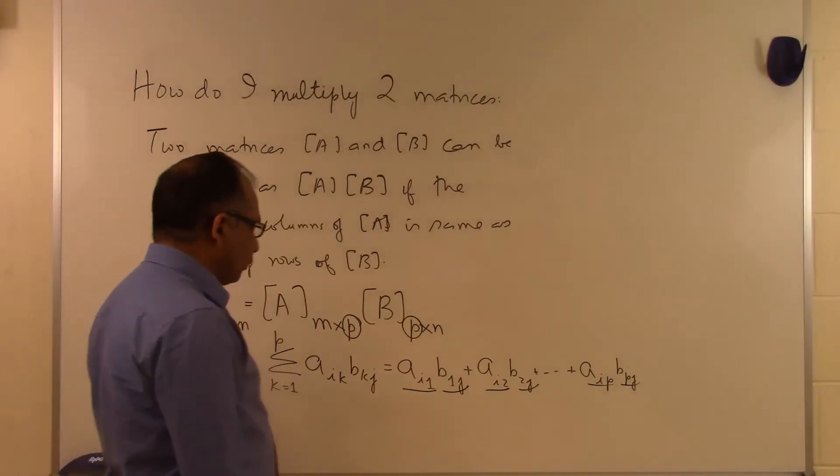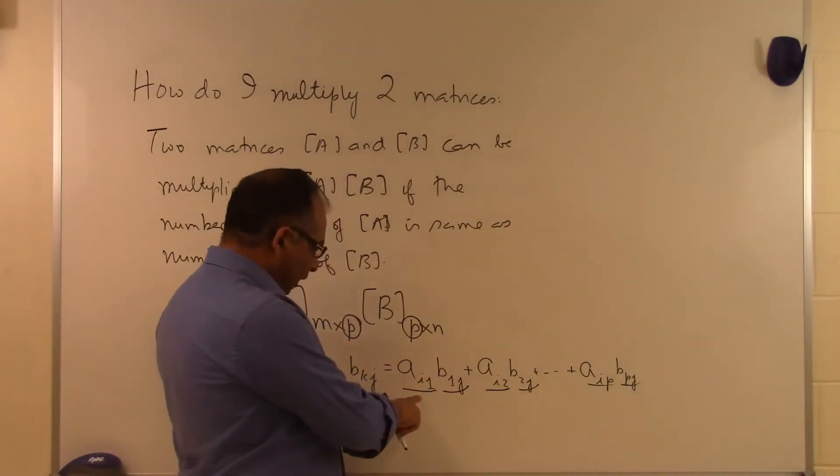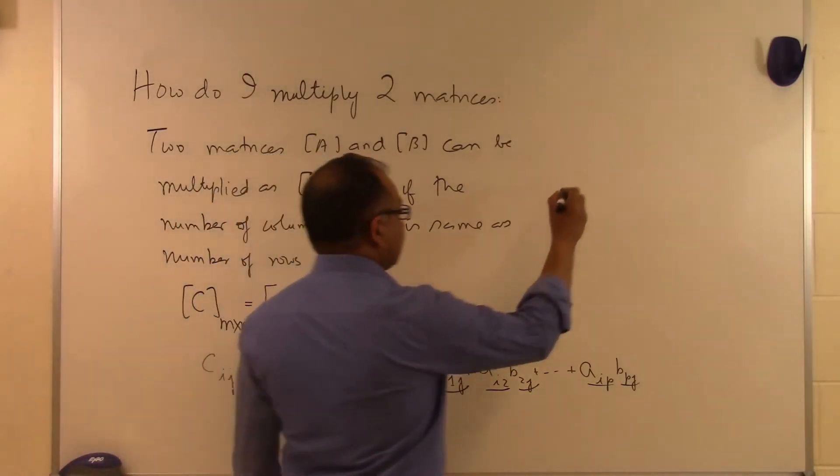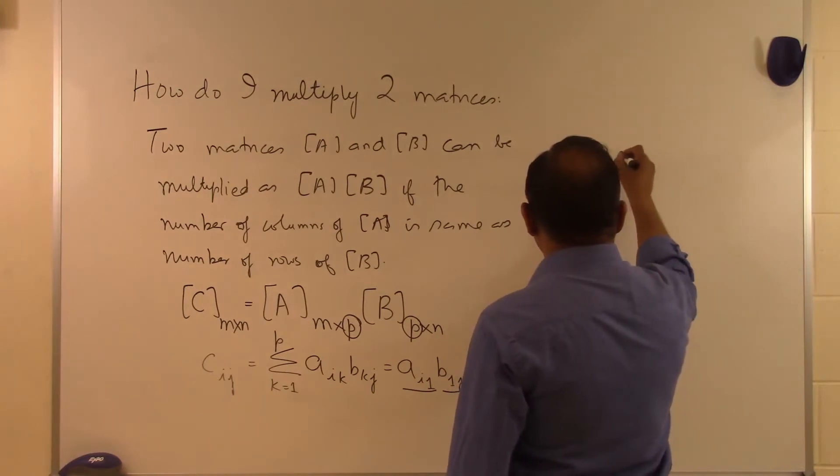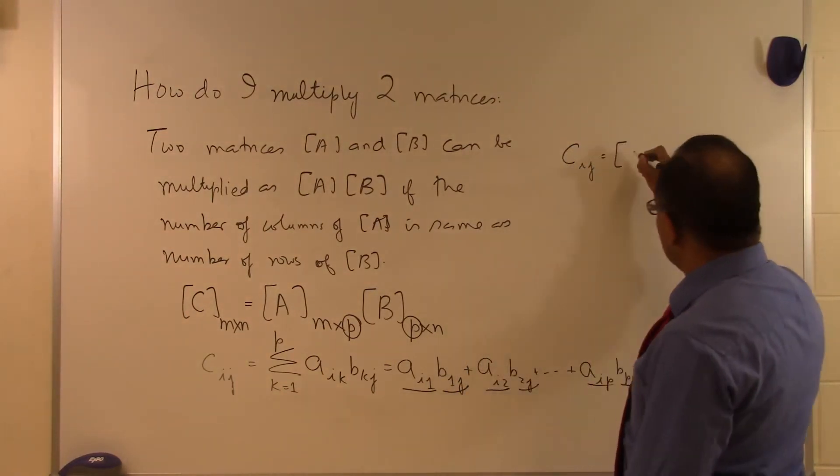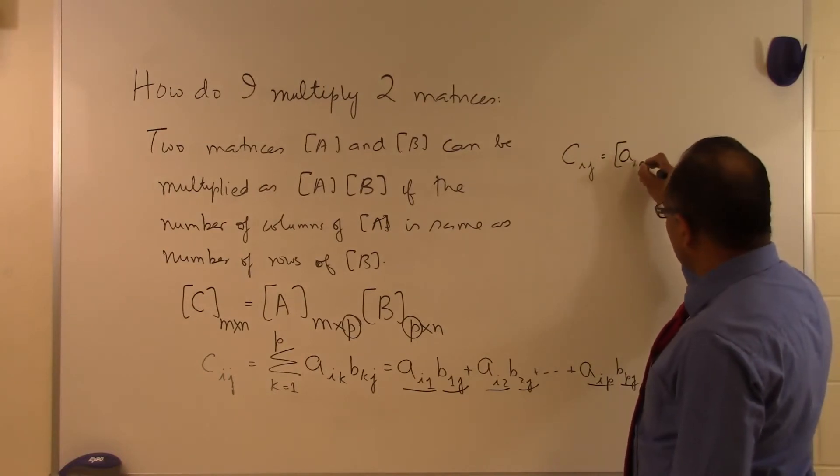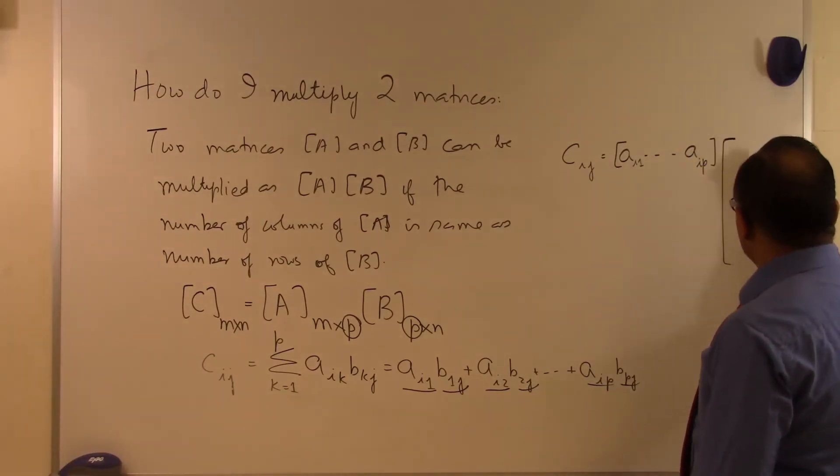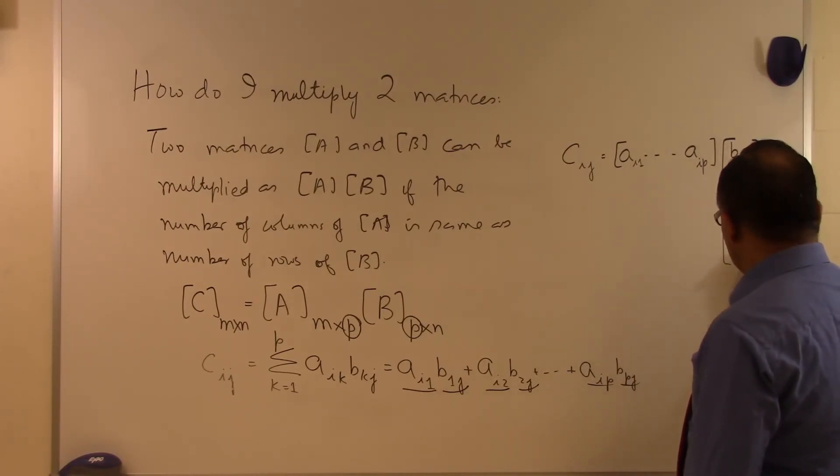This can also be viewed as taking the ith row of A and the jth column of B. So C_ij is found by taking the ith row of A: A_i1 through A_ip, and multiplying by the jth column of B: B_1j through B_pj.